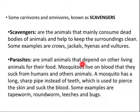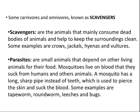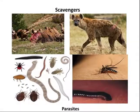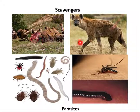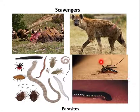Another category is parasites. Parasites are small animals that depend on other living animals for their food. For example, mosquitoes live on blood that they suck from humans and other animals. A mosquito has a long sharp tube instead of teeth, which is used to pierce the skin and suck blood. Other examples of parasites are tapeworm, roundworm, leeches, and bugs. Here are some pictures of scavengers and parasites — vultures, hyena, leeches, bugs, lice, tapeworm, and mosquito.